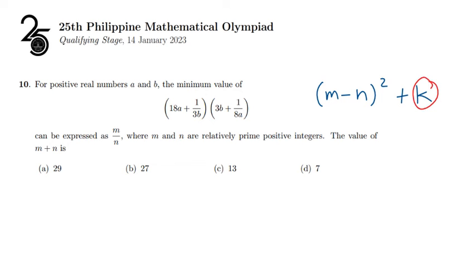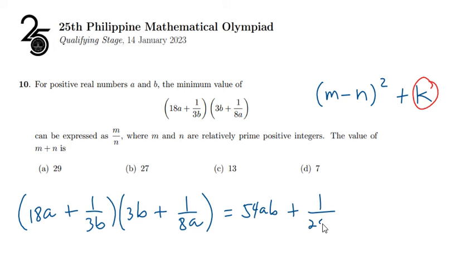Alright, let us start by expanding the given product (18a + 1/3b)(3b + 1/8a). This is equal to 54ab + 1/(24ab) + 13/4.